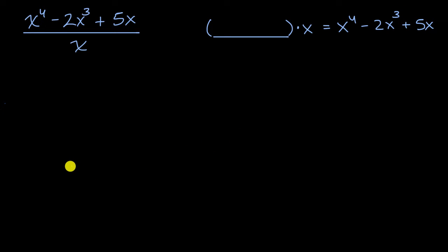Now how do I approach that? Well there's two ways that I could tackle it. One way is I could just rewrite this expression, and I will just make this x in yellow so I can keep track of it. I could just rewrite this as one over x times x to the fourth minus two x to the third plus five x. And then I can distribute the one over x.